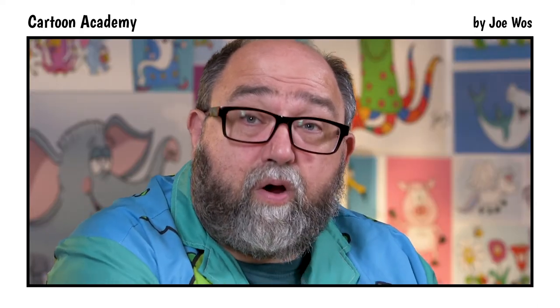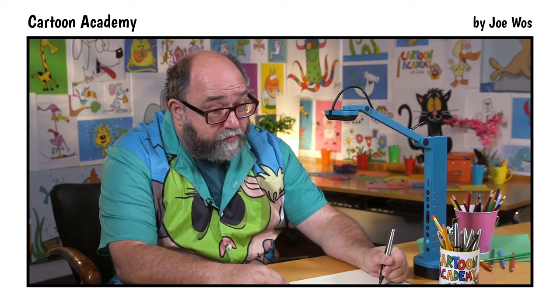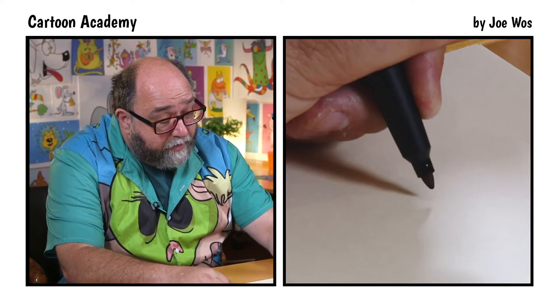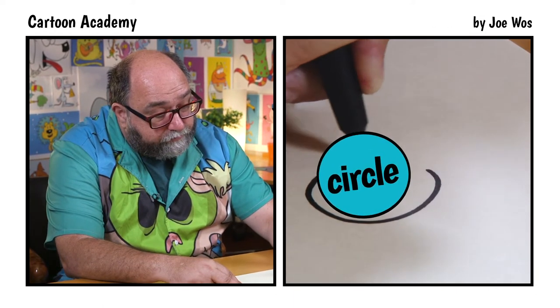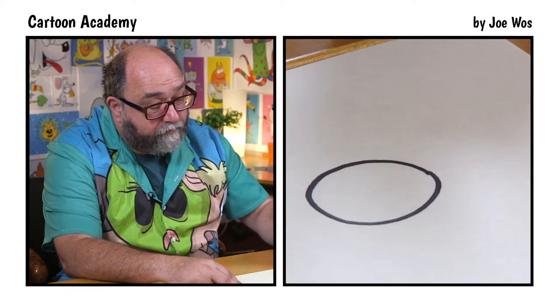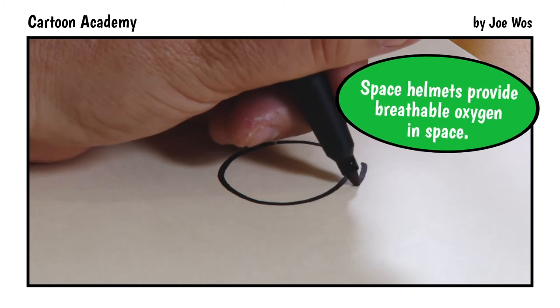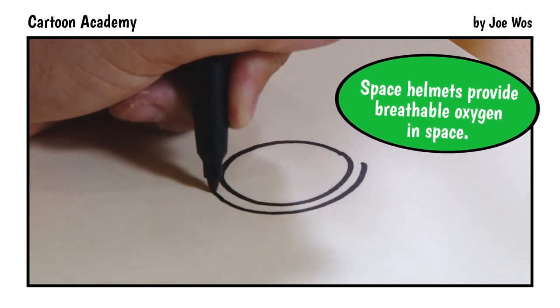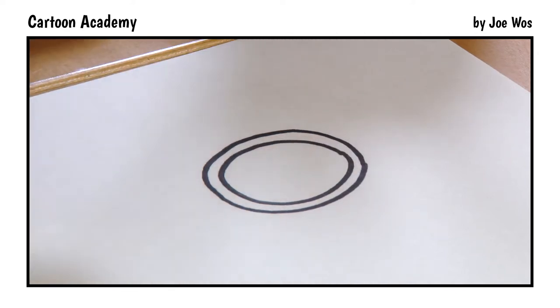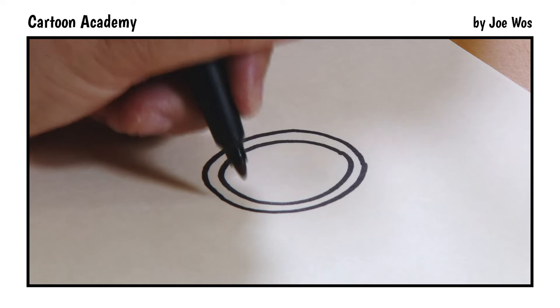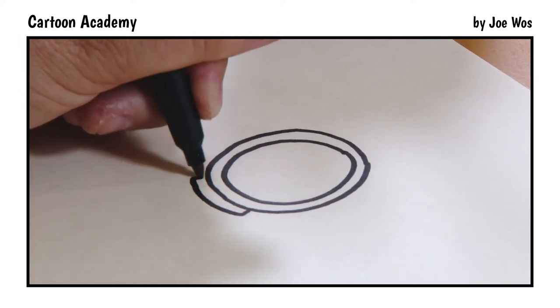We're going to begin by drawing our astronaut. We're going to start with his space suit, the helmet specifically. It's going to be a circle. We draw a slightly larger circle just outside of that one. Then we draw the neck piece. Line down, over, and up.